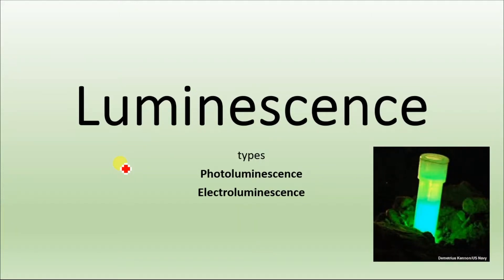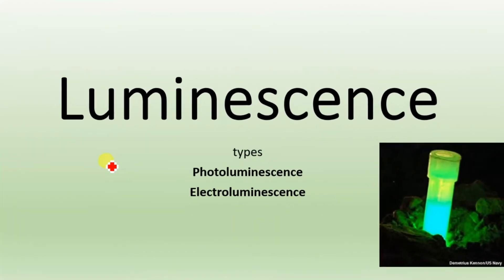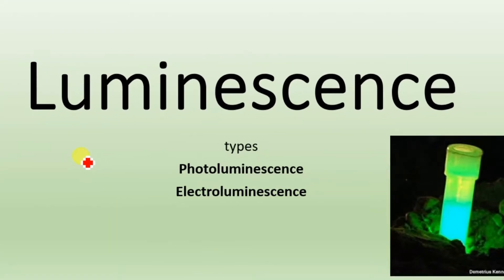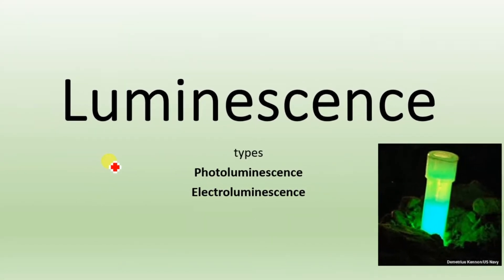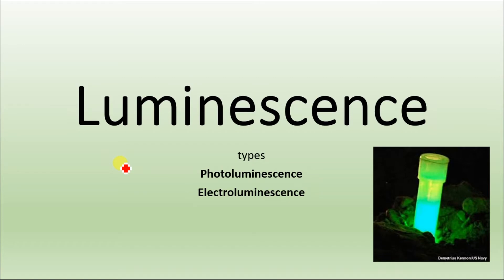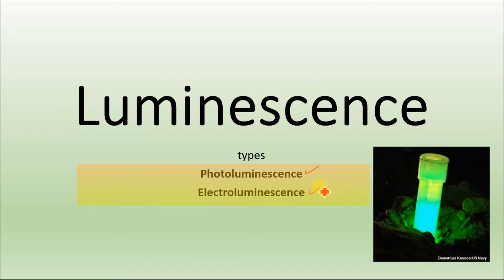Hello everyone, welcome to Easy Video. Today we are going to discuss luminescence and its types. There are two main types of luminescence: photoluminescence and electroluminescence. We will discuss these two basic types and differentiate between them, explaining the main differences.